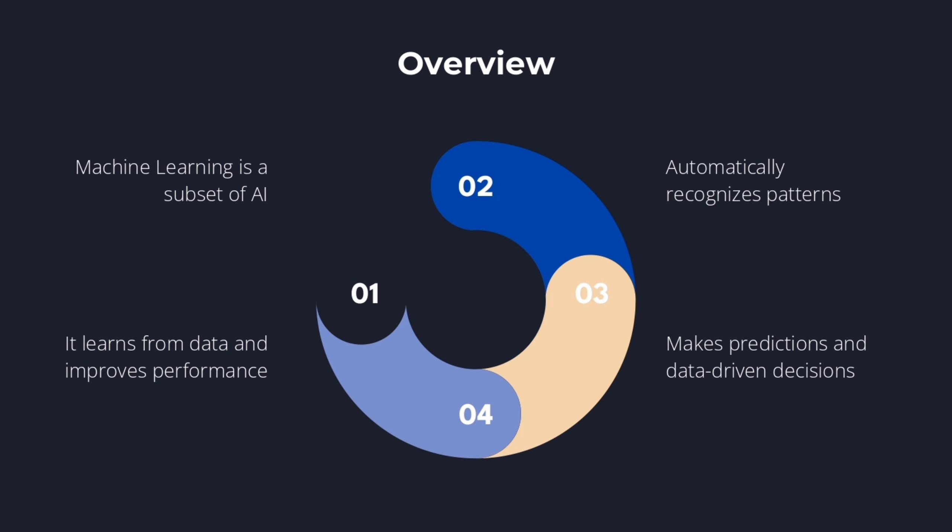Machine learning gives computers superpowers to predict, recognize, and decide like never before. So buckle up for this enlightening journey. Here are the types of machine learning which will help us to perform various tasks.